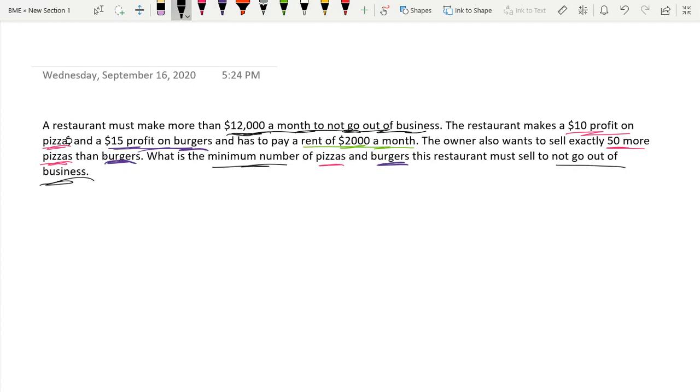So we know that we have to make $12,000 a month to not go out of business. And let's make some variables to describe pizzas and burgers. So pizzas are just P and burgers are just going to be B. Let's keep it simple instead of regular X and Y.